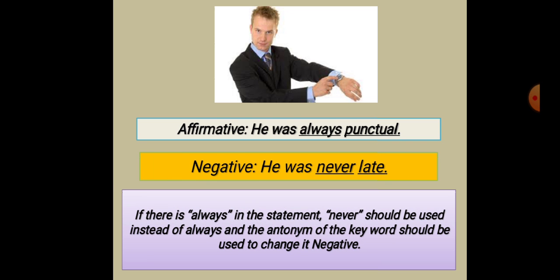Affirmative: 'He was always punctual.' Negative: 'He was never late.' If there is 'always' in a statement, 'never' should be used instead of 'always' and the antonym of the key word should be used to change it to negative. If there is 'always', you have to change 'always' into 'never' and provide the opposite word of the adjective.